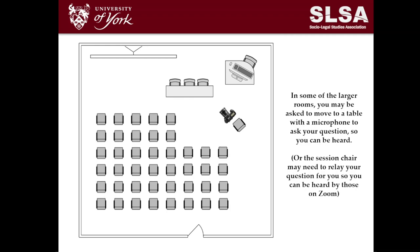For slightly larger rooms and streams where we're expecting a lot more physical attendance, in some lecture theatre-type setups you may be asked to move to a table with a microphone to ask your question face-to-face so you can be heard. In certain rooms, the session chair may also need to relay your question if you're at the back of the room so it can be heard by those on Zoom. The conference assistant in those rooms will be able to explain the setup on the day.